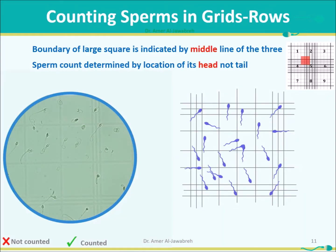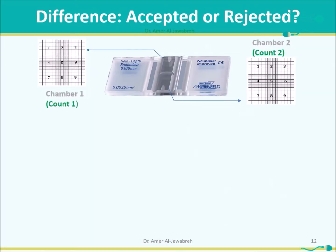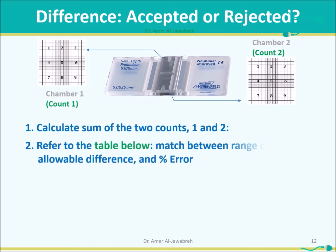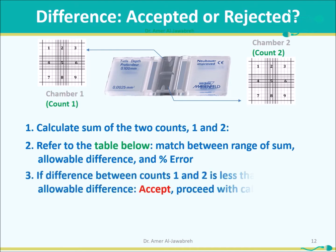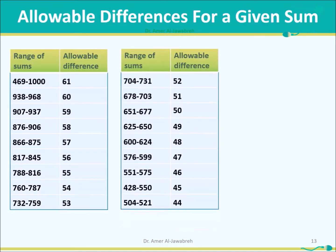When counting sperms in grids and rows, the boundary of the large square is indicated by the middle line of the three. A sperm's count is determined by the location of its head, not its tail. To assess difference between replicate counts: calculate the sum of the two counts, refer to the table, and match the range of the sum to the allowable difference and percent error. If the difference between counts 1 and 2 is less than the allowable difference, accept and proceed. If greater, reject and make a new dilution.